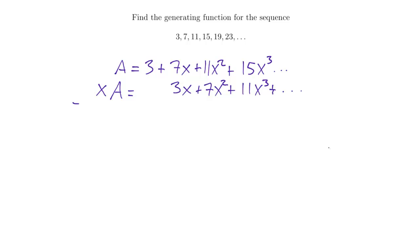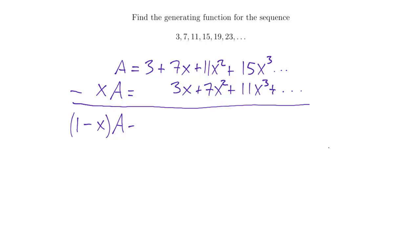When I subtract the bottom line from the top line, on the left-hand side I get (1 minus x) times A. On the right-hand side: 3 minus 0 is 3; 7x minus 3x gives 4x; 11x squared minus 7x squared gives 4x squared; 15x cubed minus 11x cubed gives 4x cubed. Because these differences are always 4, I always get 4 times some power of x, and this keeps going on forever.